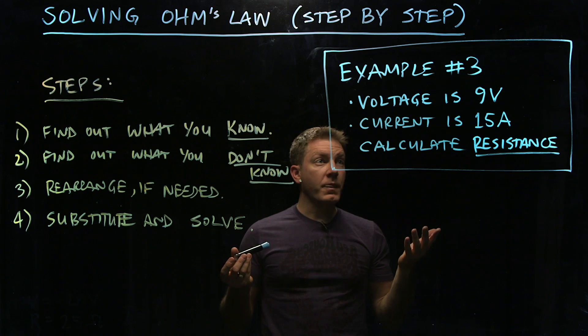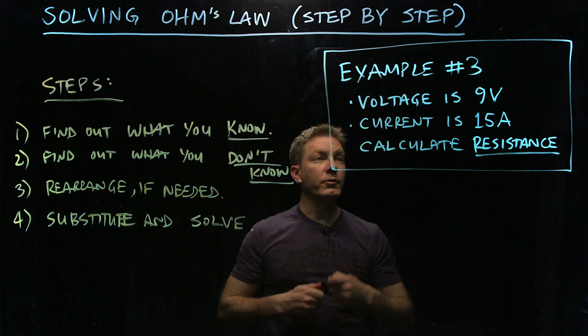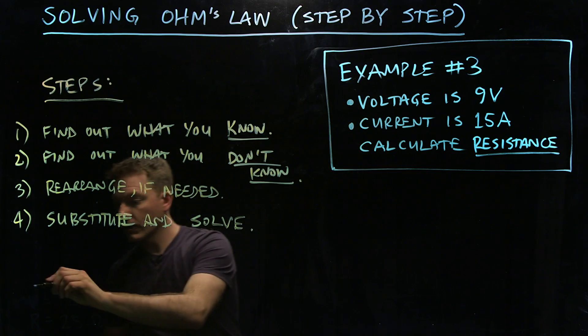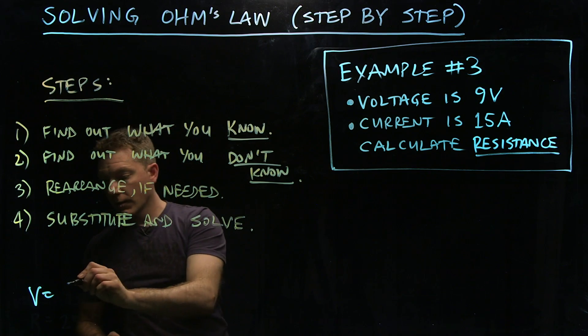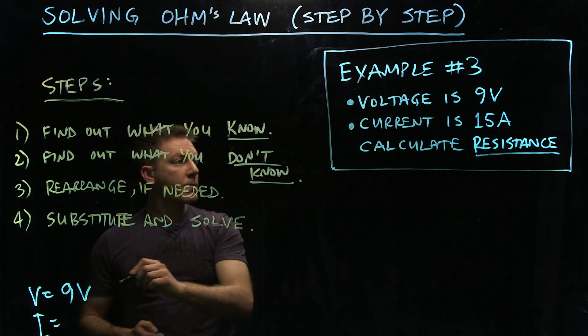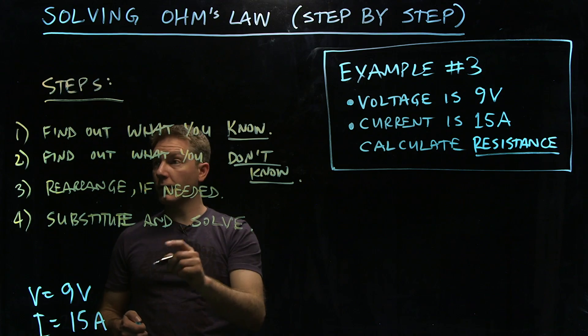So now, we have to figure out step one: find out what you know. What do we know? We know this one, we know this one, so voltage 9 volts, current 15 amps, that's what we know.